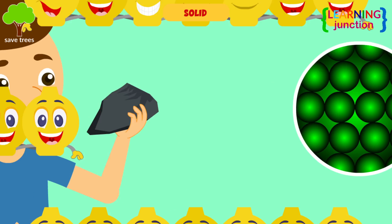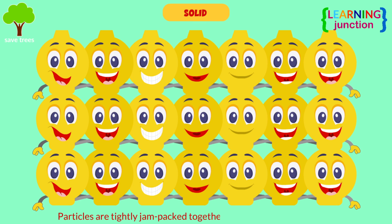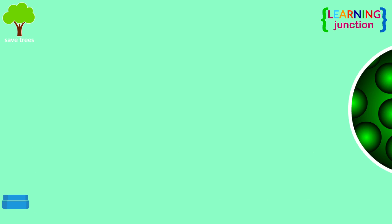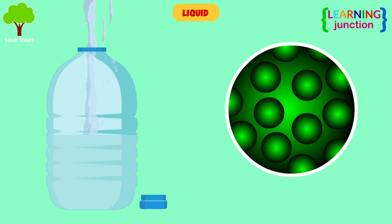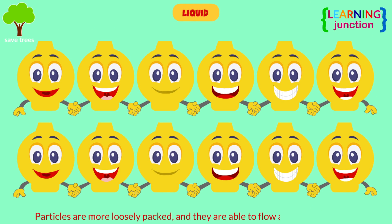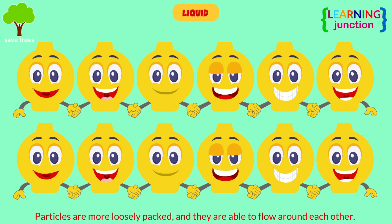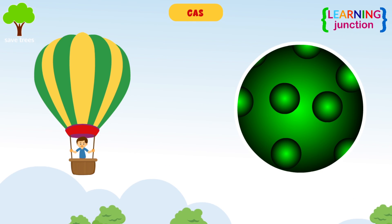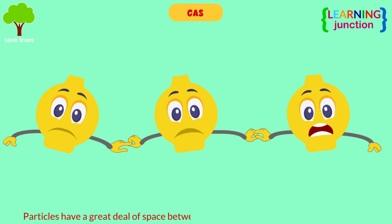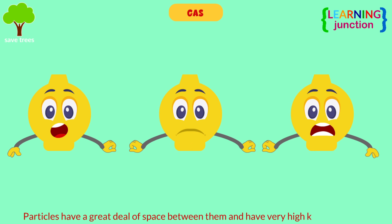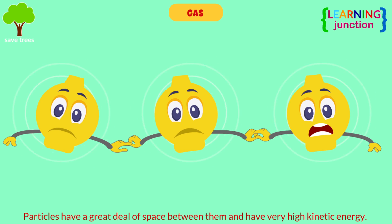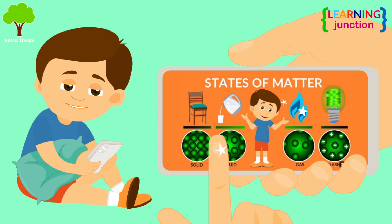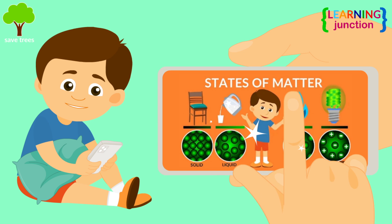Solids: in this state, particles are tightly jam-packed together, so they don't move much. Liquids: in a liquid state, the particles are more loosely packed, and they're able to flow around each other. Gases: in this state, the particles have a great deal of space between them and have very high kinetic energy. To know more about this, watch our video, States of Matter.